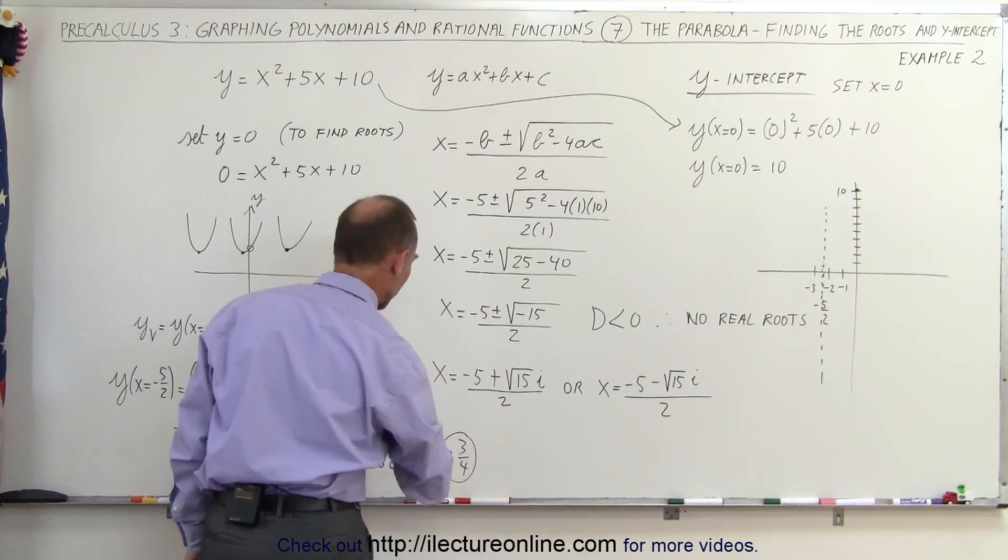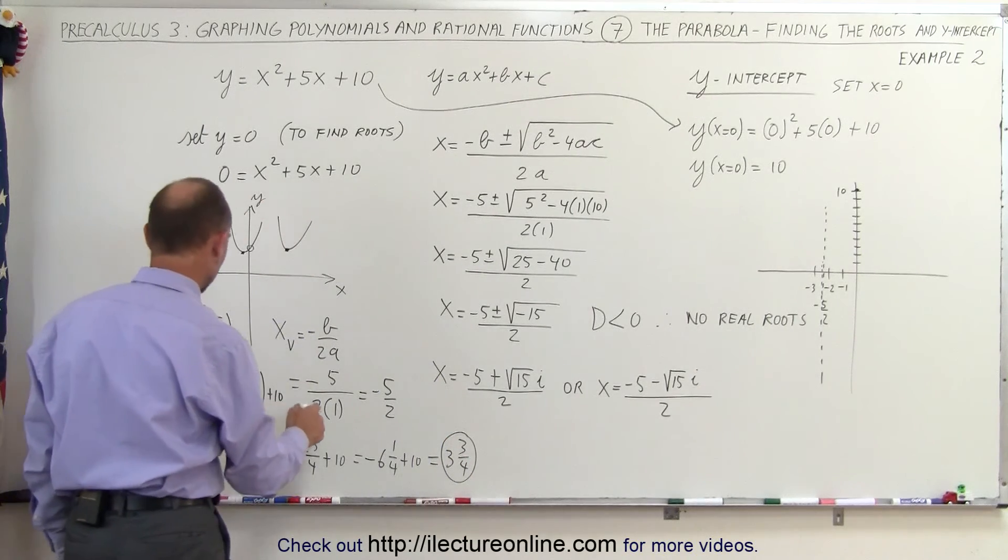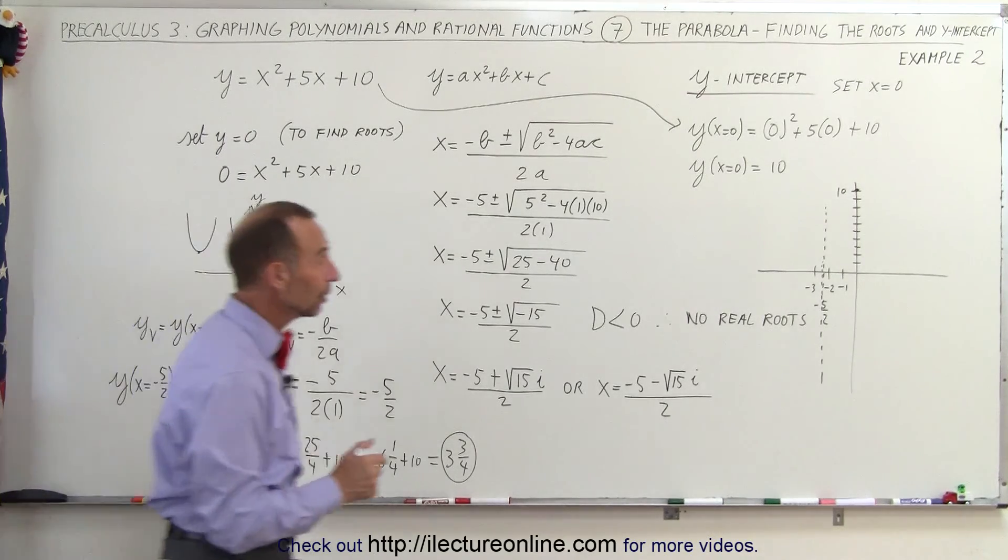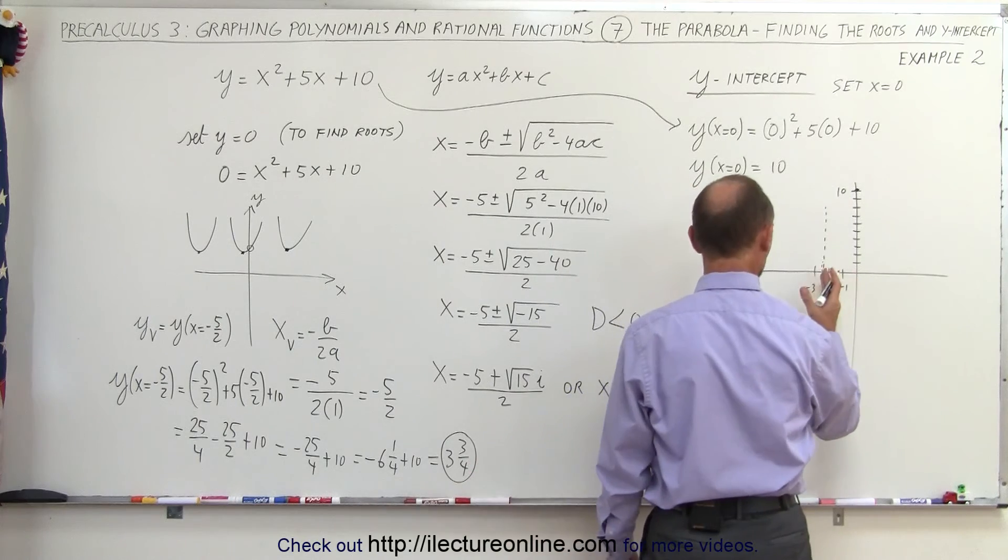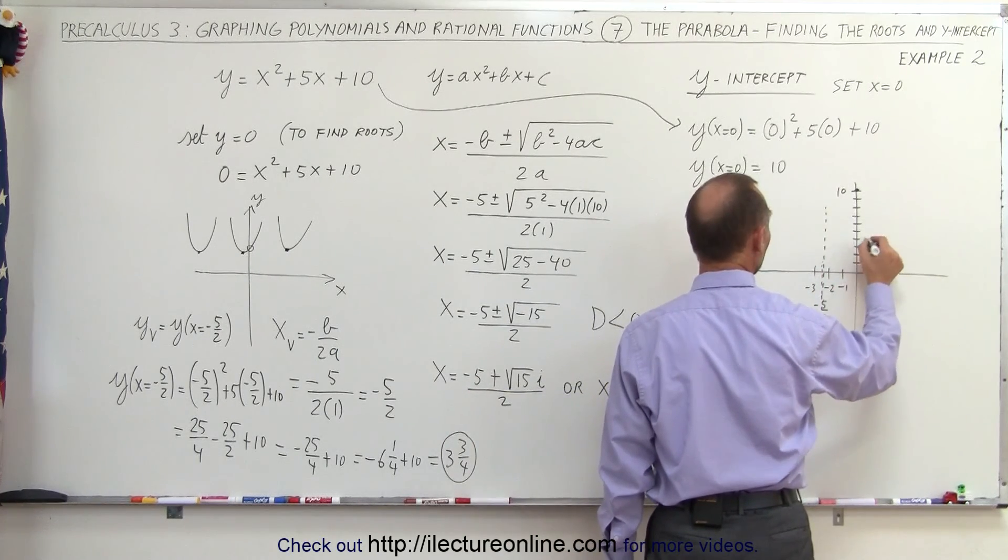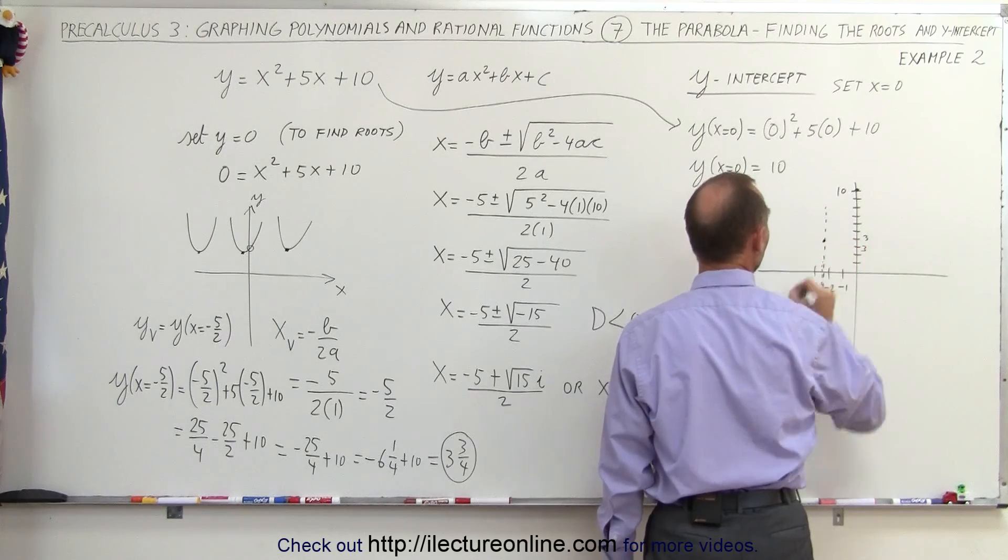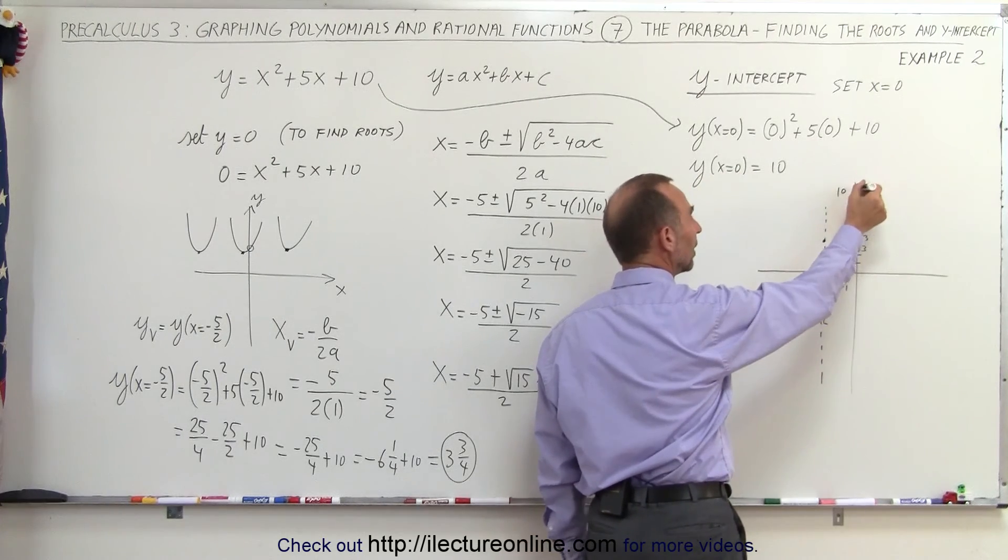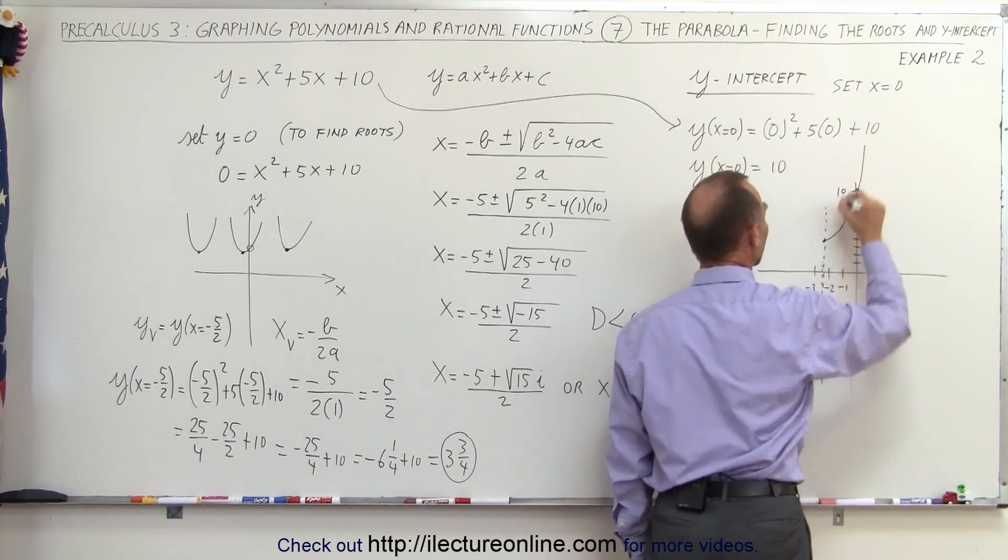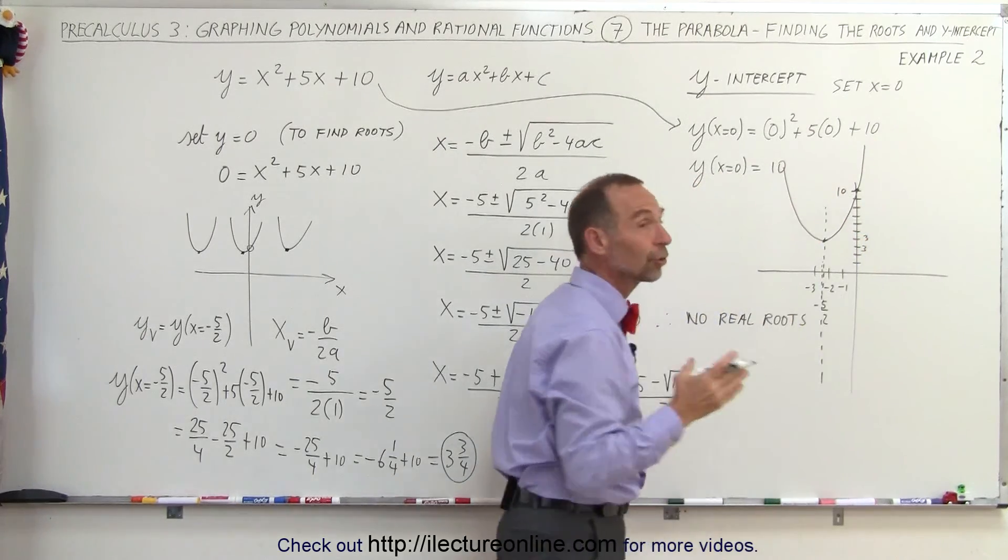So the y-value is 3 and 3 quarters when the x-value is equal to minus 5 over 2. So now we can find that point. My x-value is minus 5 halves. My y-value is between 3 and 4. So right about there. And so now I can see that we have the y-intercept and we have the vertex.